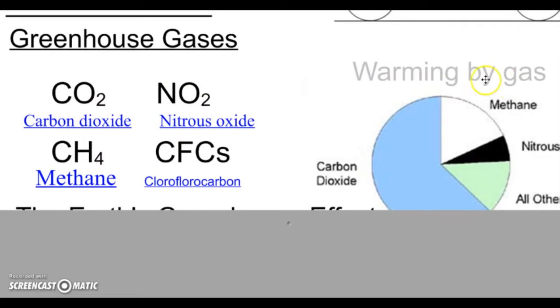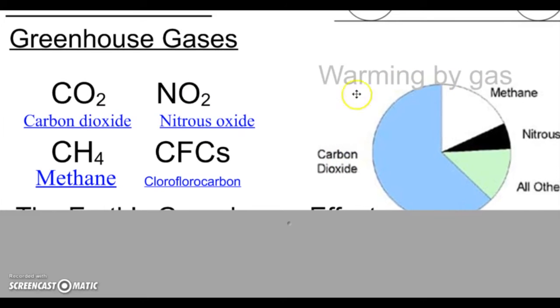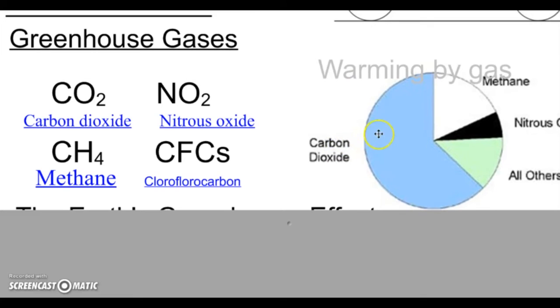The warming by gas: each gas does a different amount of warming. Carbon dioxide does the biggest amount, so carbon dioxide is responsible for most of the warming that happens. Methane comes in second. Nitrous oxide comes in third. And then all others, including CFCs and HCFCs, come in all others. So the takeaway here is carbon dioxide is probably the most important one, second is methane.